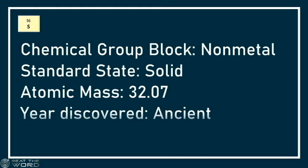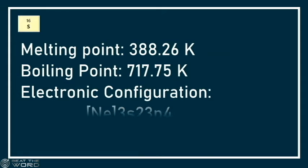Chemical group block: non-metal. Standard state: solid. Atomic mass: 32.07. Year discovered: ancient. Melting point: 388.26 kelvin. Boiling point: 717.75 kelvin. Electronic configuration: neon 3s2, 3p4.